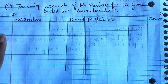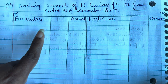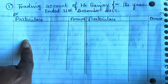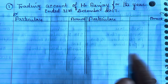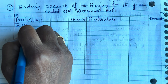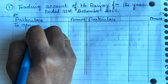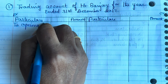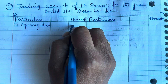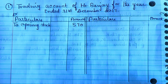First, opening stock. Opening stock comes on the debit side of the trading account. So write opening stock on the debit side — that is 570.